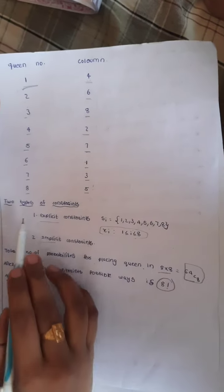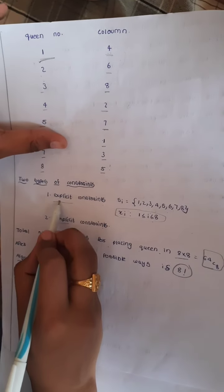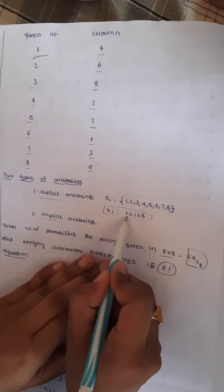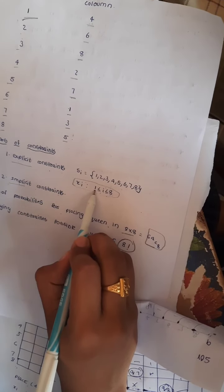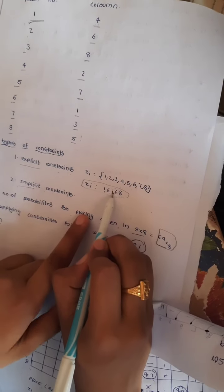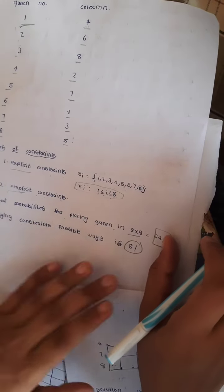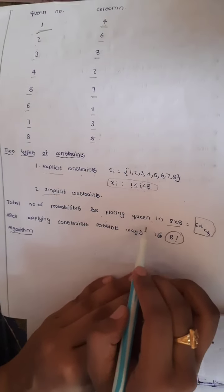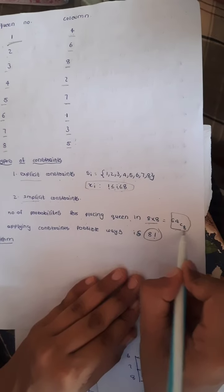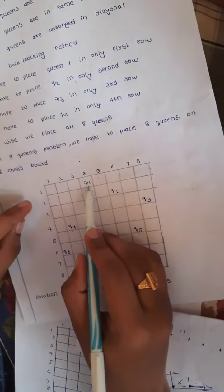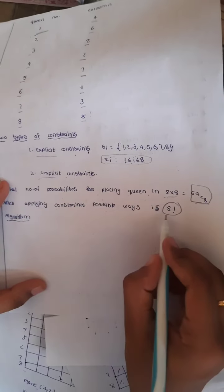There are 2 types of constraints in the N Queens problem: explicit constraints and implicit constraints. For explicit constraints, we write the solution vector where i belongs to 1 to 8 — i is the column number for each of the N queens. For implicit constraints, the total number of possible placements on an 8x8 board is 64C8. After applying the row-based constraint, the possible arrangements reduce to 8 factorial ways.